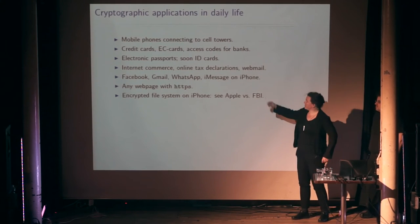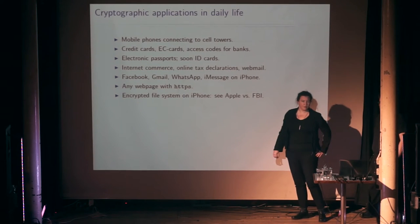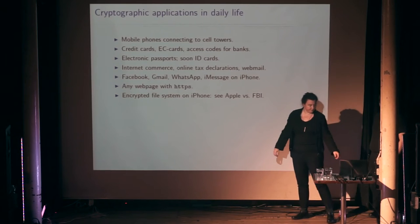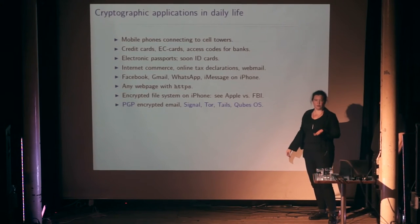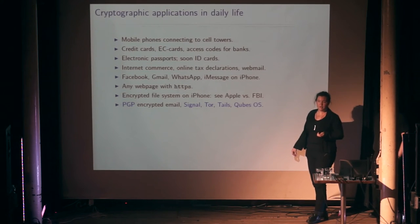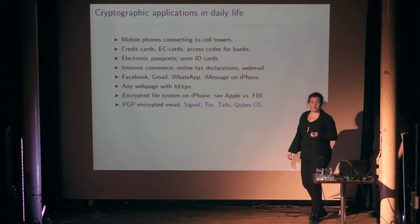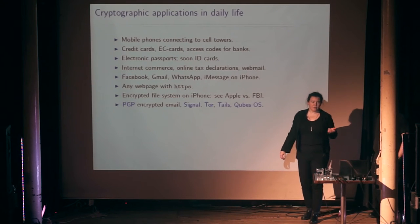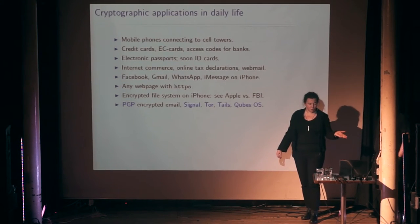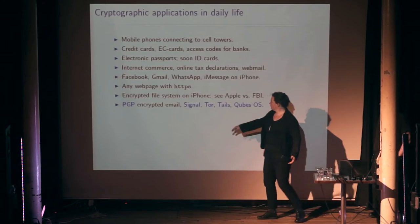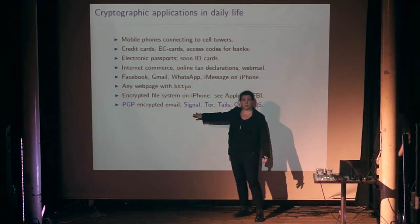If you're using WhatsApp, there was a news item two weeks ago that WhatsApp is now using proper encryption by default. If you want to go further and actually use cryptography, you might have decided to download PGP — one of the oldest mail encryption systems. I would recommend if you're having a cell phone for both Android or iPhone, you can download Signal, which is a free app and does encrypted messages and encrypted calls. This is super easy to use and just does everything encrypted.